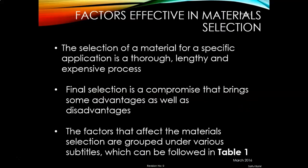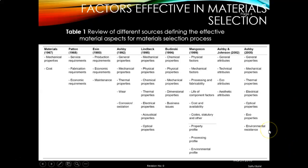Some factors affecting material selection. The selection of a material for a specific application is a lengthy and expensive process. The final selection is a compromise that brings some advantages as well as disadvantages. The factors that affect material selection are grouped under various subtitles, which can be followed in Table 1. This table reviews different sources defining the effective material aspects for the material selection process.